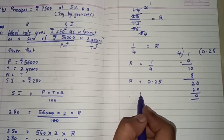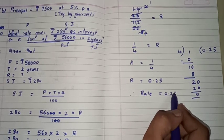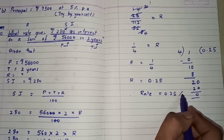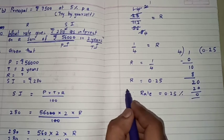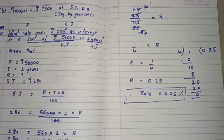To yahaan likhenghe therefore rate is equal to 0.25. Hamesha rate hum percentage may calculate kerte to yaha par percentage ka symbol mention karna hoga. Therefore rate is equal to 0.25 percent, that is the final answer.